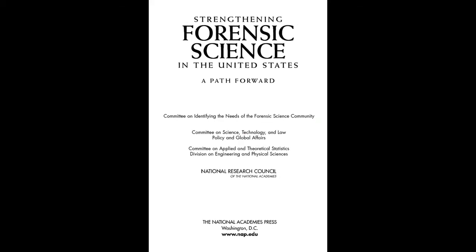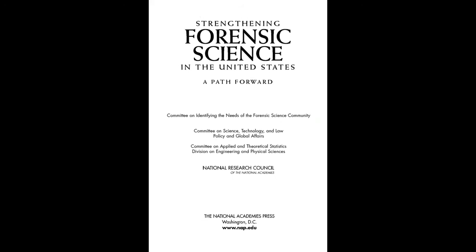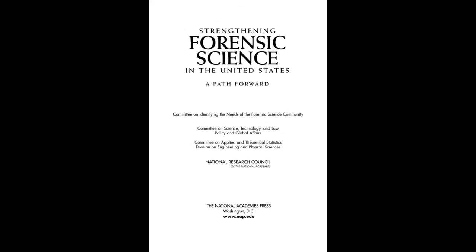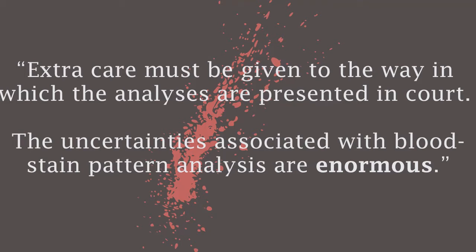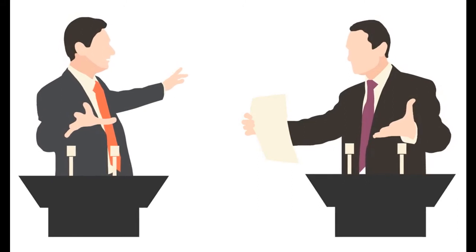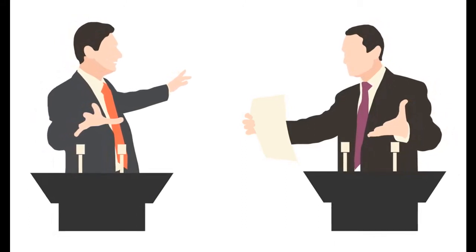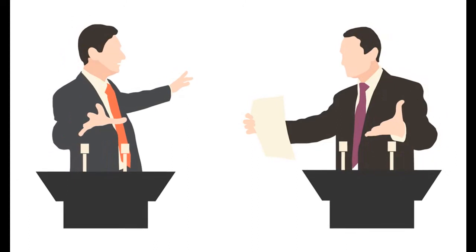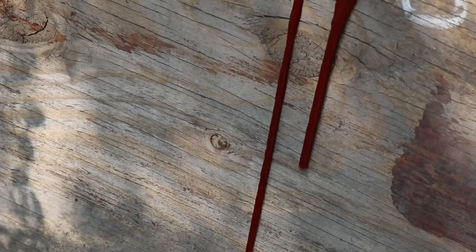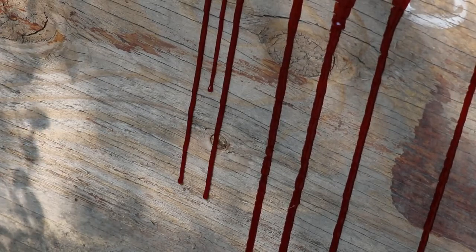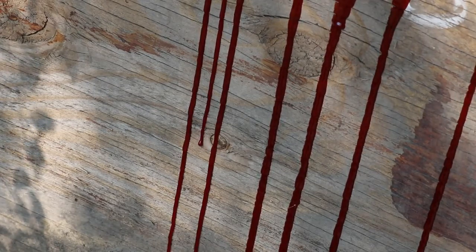An American report published in 2009 stated that in general the opinions of bloodstain pattern analysis are more subjective than scientific, and that extra care must be given to the way the analysis is presented in court. This is because experts hired by both the prosecution and the defence can study bloodstains left at a crime scene and come to extremely different conclusions about what occurred, despite both using proper methods and established procedures — bringing into question both the reliability of their conclusions and whether bloodstain pattern analysis holds any value as evidence in a criminal trial.